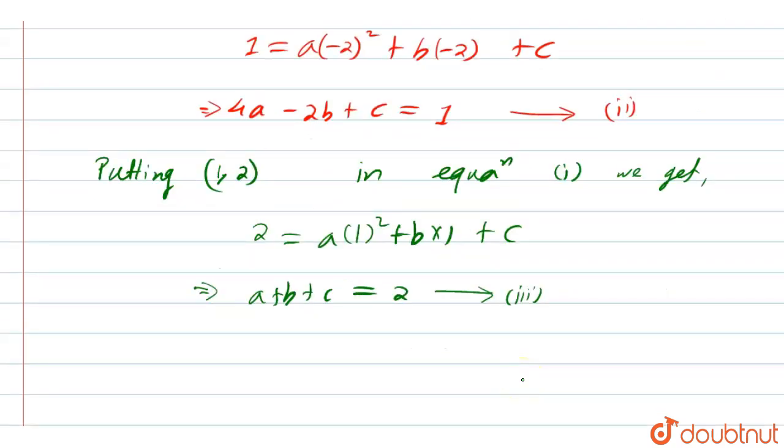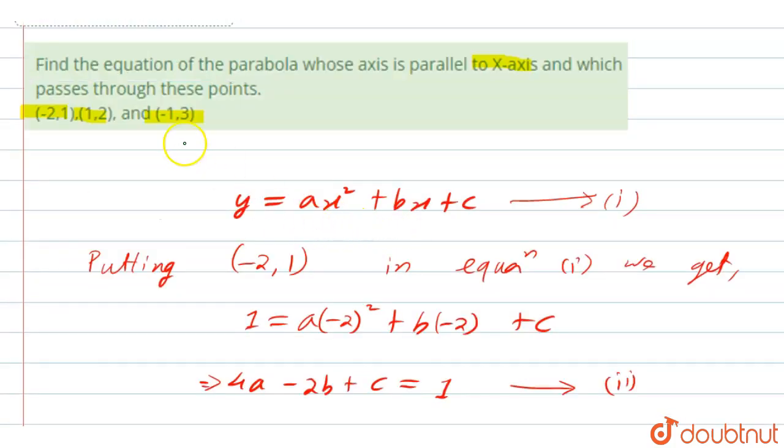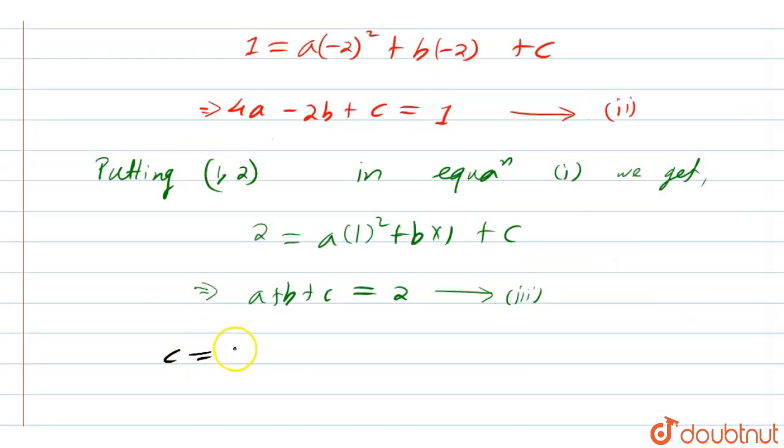Now similarly for third case, if we put minus 1 comma 3 in this equation, then we will get c equal to 3 minus a plus b. Let this be equation 4.